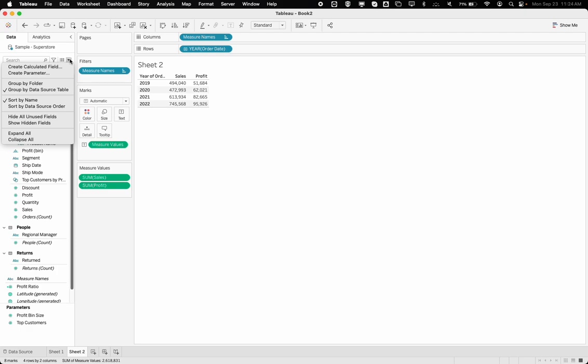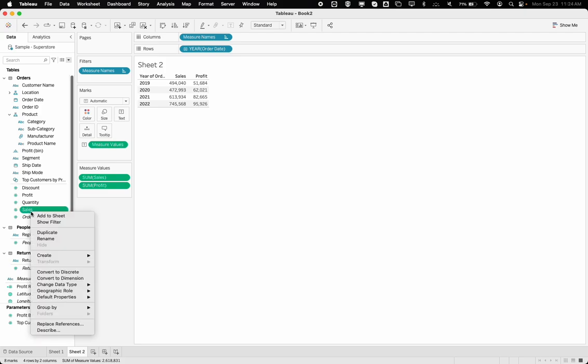So I can click on this button over here, the dropdown over here and go to create calculated field. I can also use an existing field over here such as sales, right click, create calculated field.